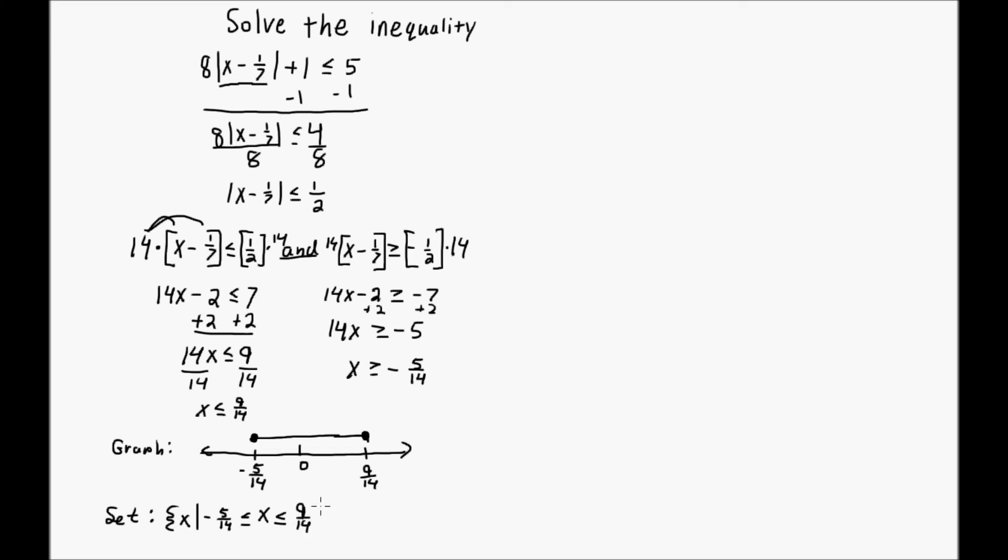And essentially what this is saying is that x is between negative 5 over 14 and 9 over 14, and also it can be negative 5 over 14 and 9 over 14. So this x is in the middle, and that's what this set builder is saying.